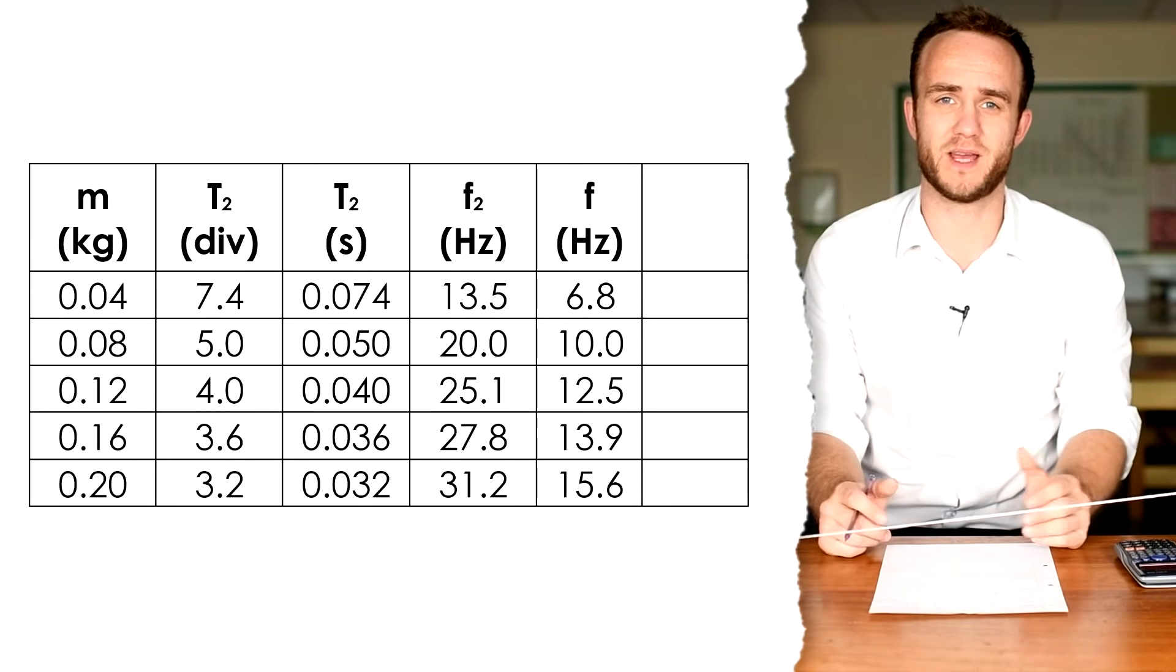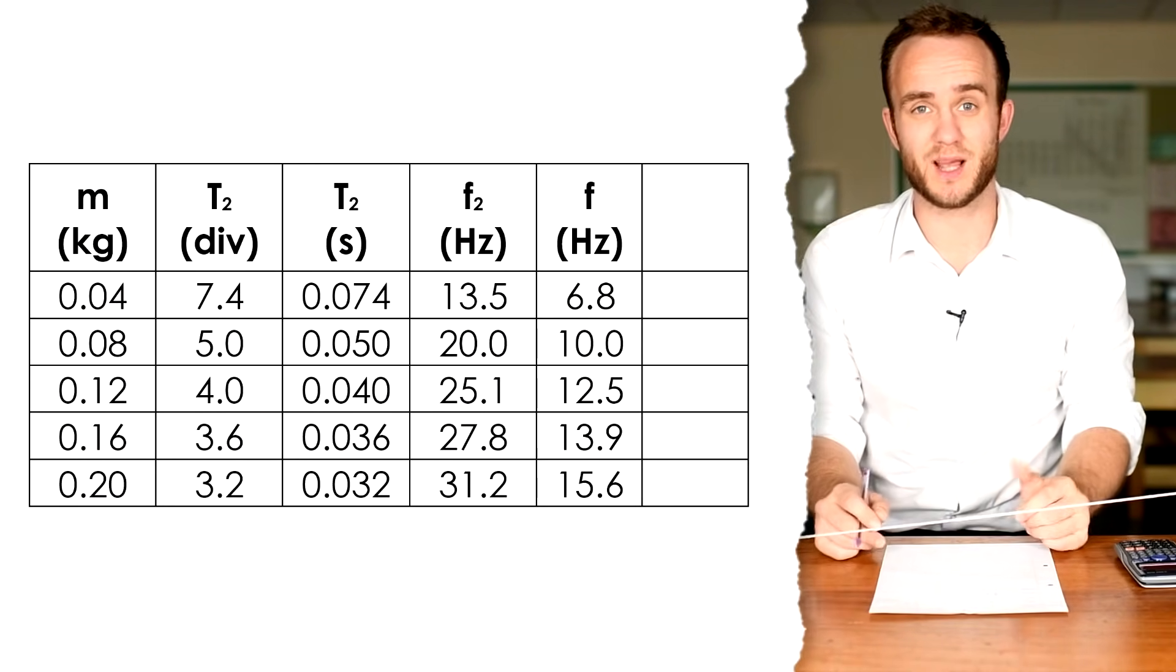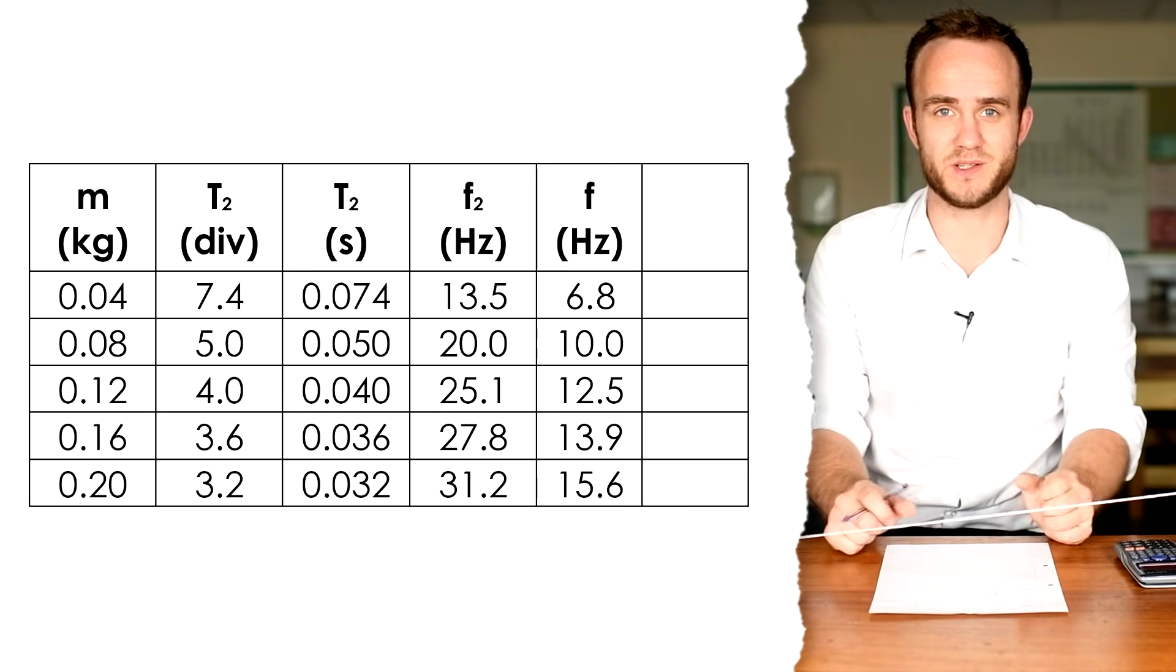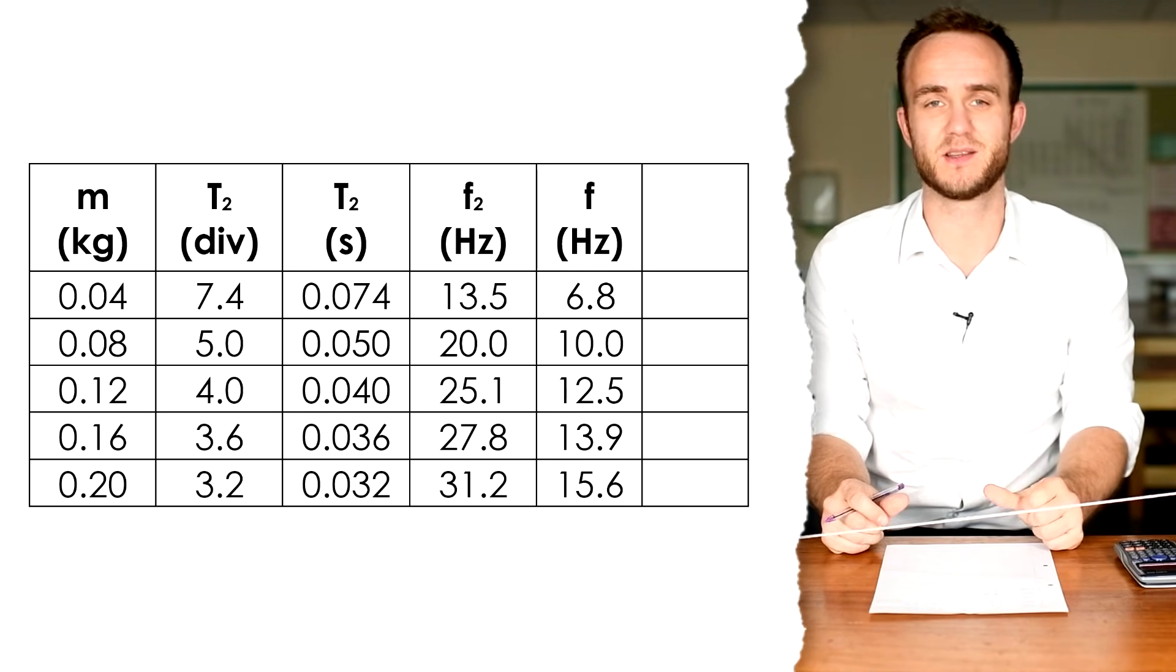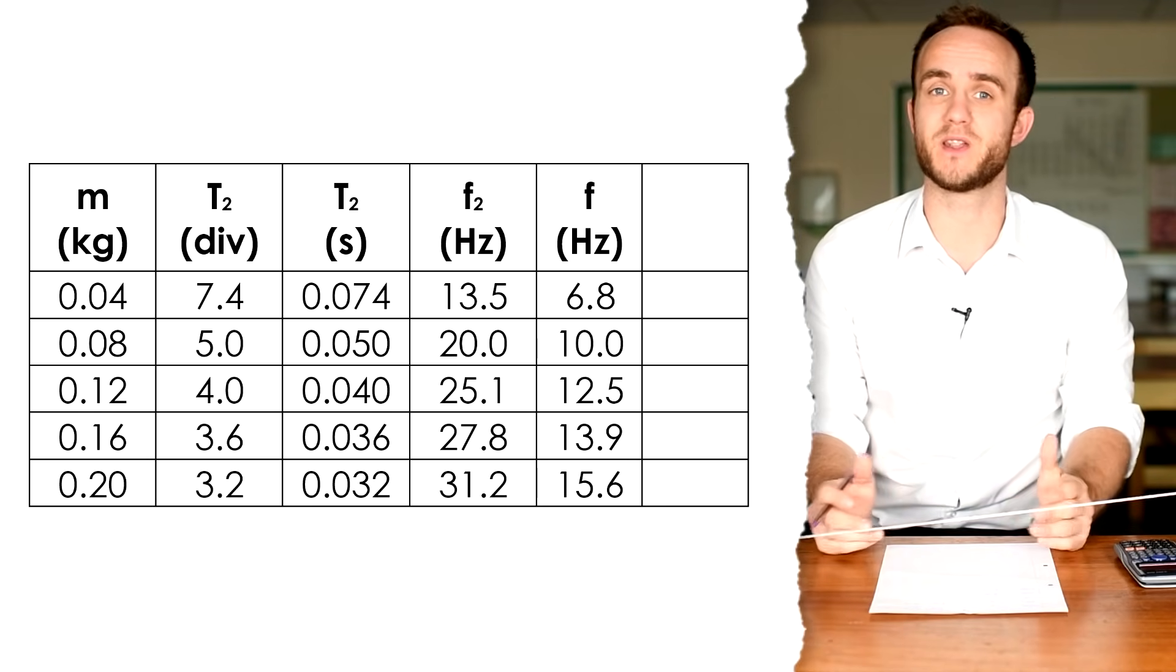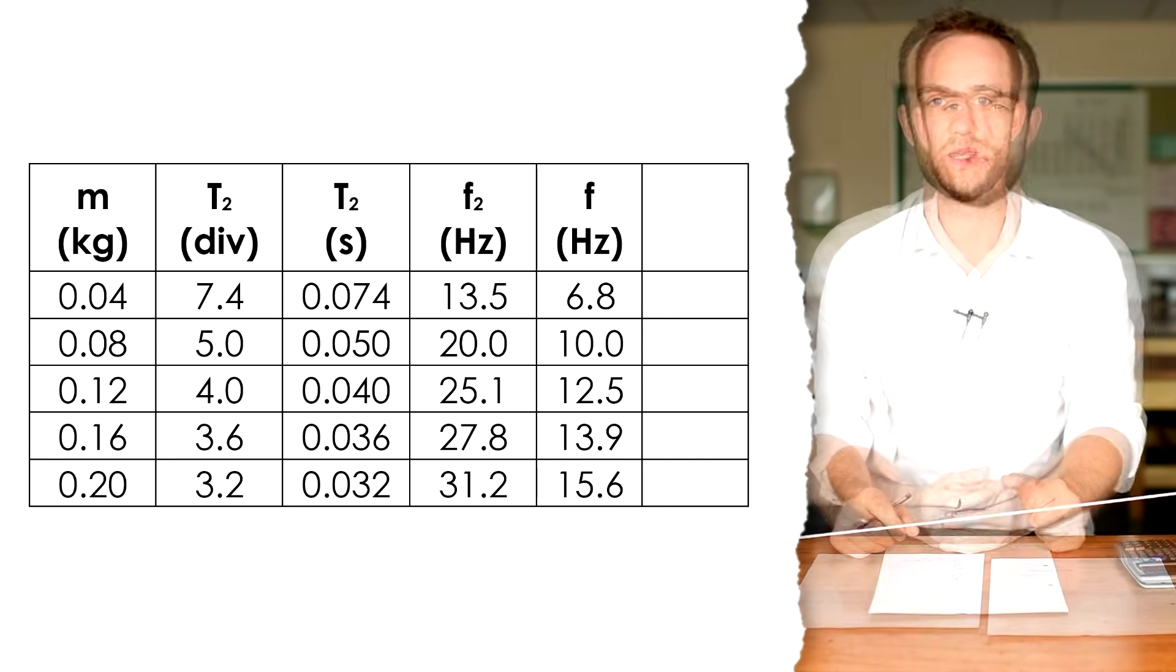So, my data looks like this. I have the mass that was on the end of the string. I've converted that into kilograms because we need to do that if we're going to do some analysis, and I have my frequency of the fundamental. That's the first harmonic.